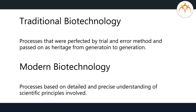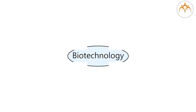In a similar way, we could use the term modern biotechnology for the variety of processes that we use today. The major difference between traditional and modern biotechnology is that the processes of modern biotechnology are based on a detailed and precise understanding of the scientific principles involved. Thus, these techniques are better standardized and hence more suitable for large-scale applications.